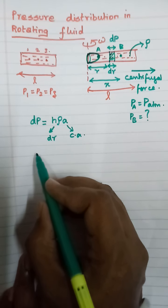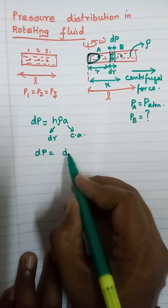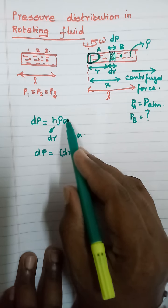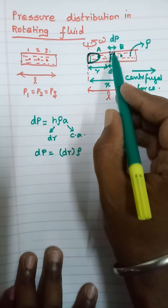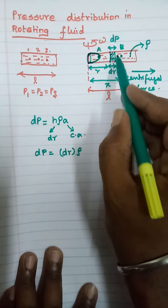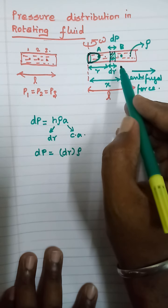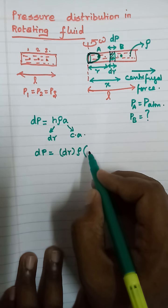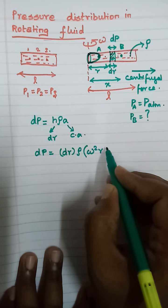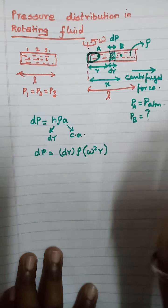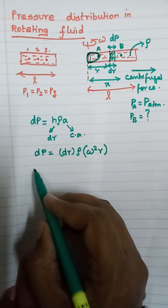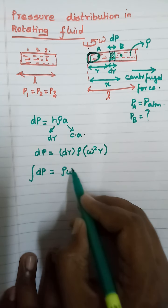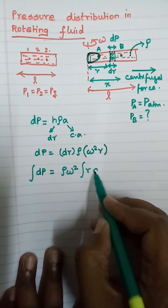Then we can rewrite this as DP is equal to DR times rho times A, where A is the centrifugal acceleration. For this small liquid column, it is experiencing centripetal acceleration A. To calculate the centripetal or centrifugal acceleration, the formula is omega squared times R, where R is the distance from the axis of rotation. So if we integrate: integration of DP equals rho times omega squared times integration of R dR.